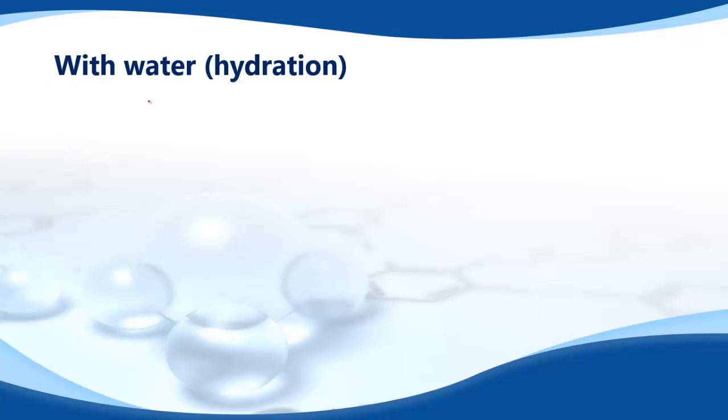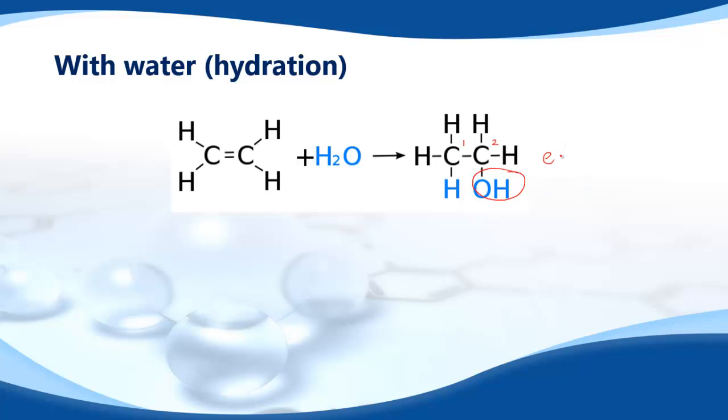Next is with water, that's called hydration. So ethene again, water, and maybe you can identify the product. We have an OH group there, two carbon atoms, it's ethanol.